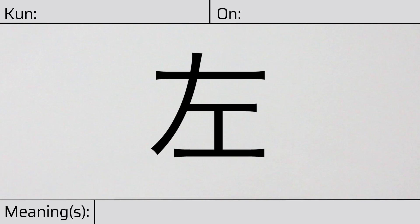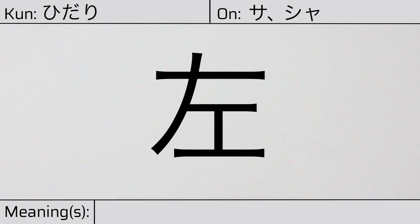Welcome to this lesson on Japanese kanji. Today, we'll be discussing this character. This kanji has a kunyomi, or Japanese reading of hidari. And it has an onyomi, or Chinese readings of sa or sha. This character has the meaning left.